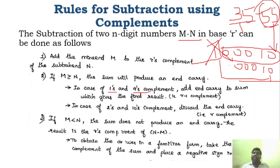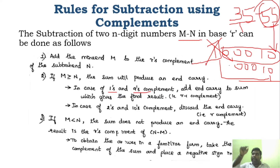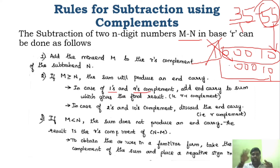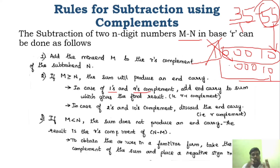If carry is not produced, for all complements the rule is the same — you need to find the R's complement of the sum and place a negative sign before it. That is your answer. These are the three rules: add minuend and R's complement of subtrahend; if carry is produced act accordingly; if carry is not produced, find R's complement of sum and place a negative sign. I have explained these rules very clearly in the 10's complement video, so please go and watch that video first.